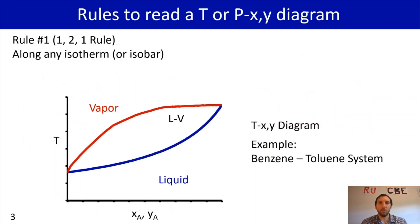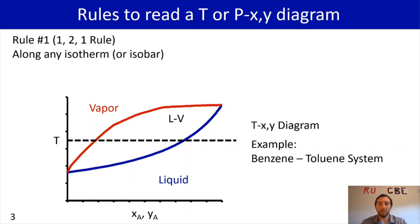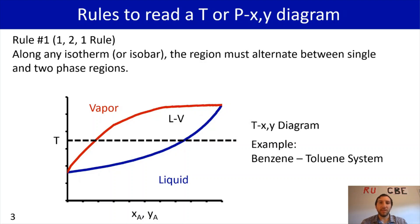We're now going to go through a couple of rules for reading these diagrams. Rule number one is the one-two-one rule. Along any isotherm or isobar — that is, a line drawn across at the same temperature or same pressure — the region must alternate between being a single and a two-phase region. Starting from left and going right, we start with one phase (vapor), go to two phases (liquid and vapor), then back to one phase (liquid). So: one-two-one.